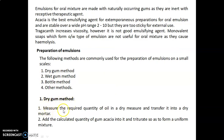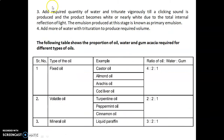In the dry gum method, first measure the required quantity of oil in a dry measure and transfer it into a dry mortar. Then add the calculated quantity of gum acacia and triturate to form a uniform mixture. Next, add the required quantity of water and triturate vigorously until a clicking sound is produced and the product becomes white or nearly white due to total internal reflection of light.